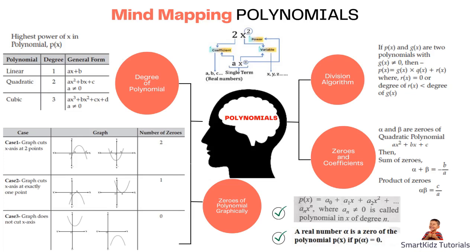To recall what polynomials are: polynomials are usually in the form p(x) = a₀ + a₁x + a₂x² and so on. The general form is aₙxⁿ, where the value of n — the subscript — is the same as the power of the variable x. In the first term a₀, the power of x is 0, because n is 0 in both places. Anything raised to 0 becomes 1, so we simply write a₀.